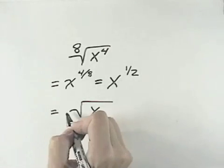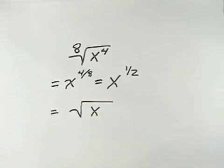But we also don't need a 2 because if it's just a square root symbol, then it's assumed to be the second root. So our result would be the square root of x.